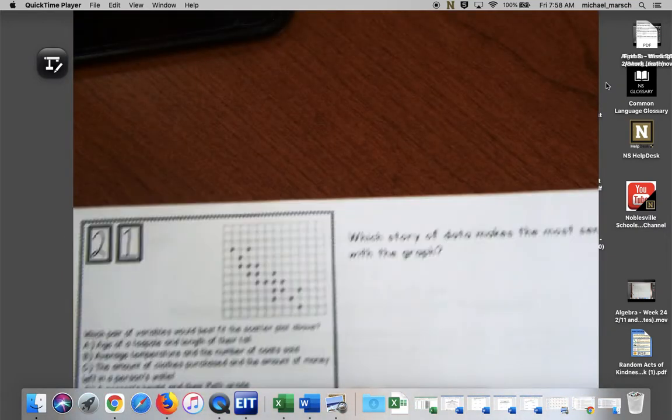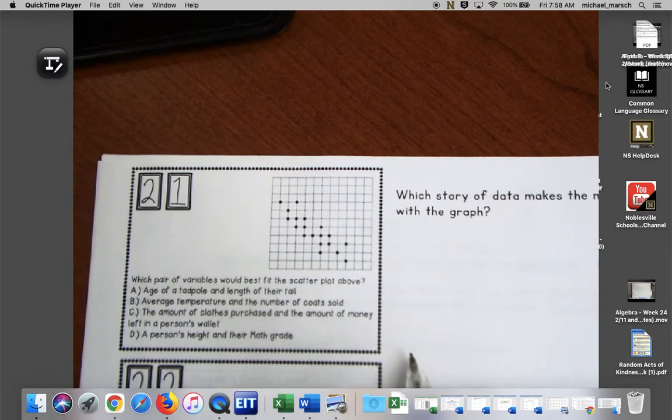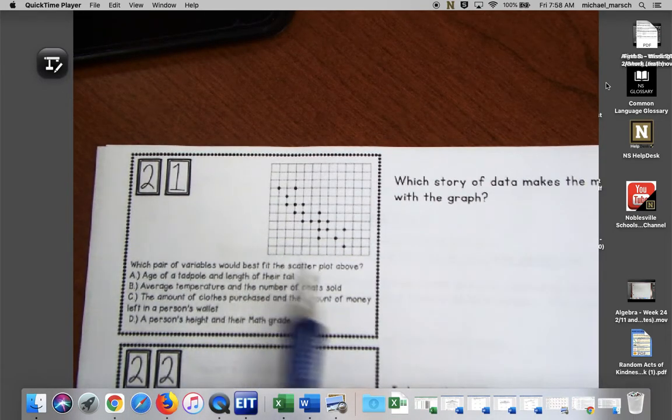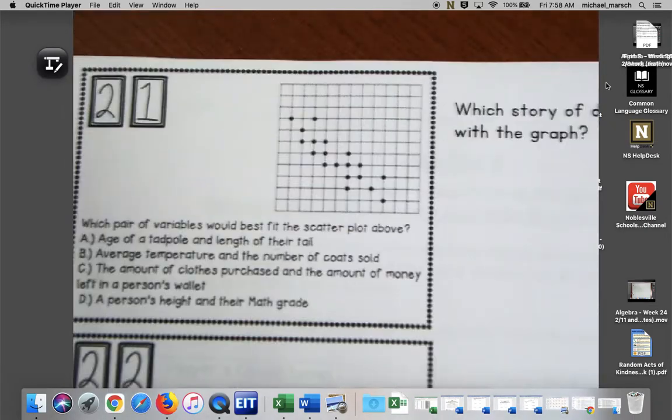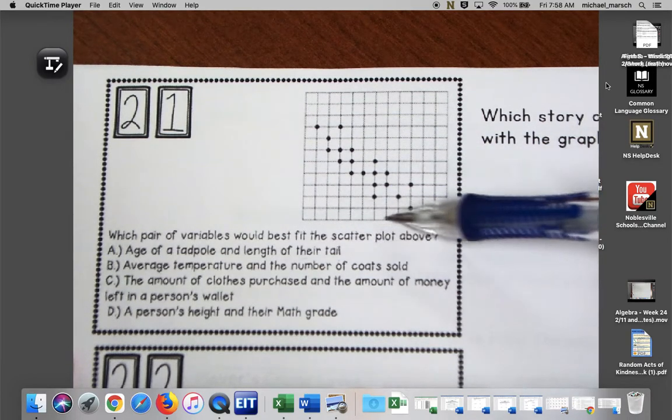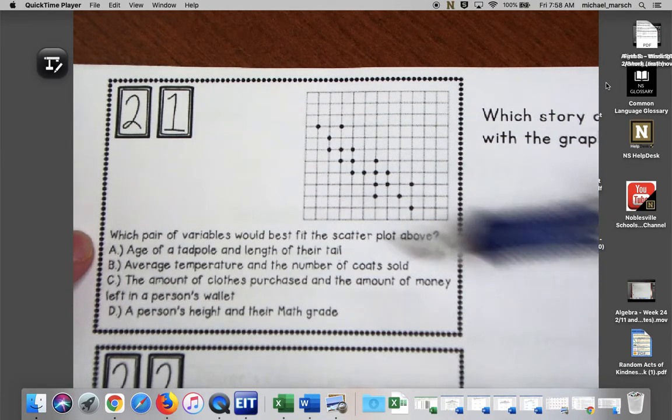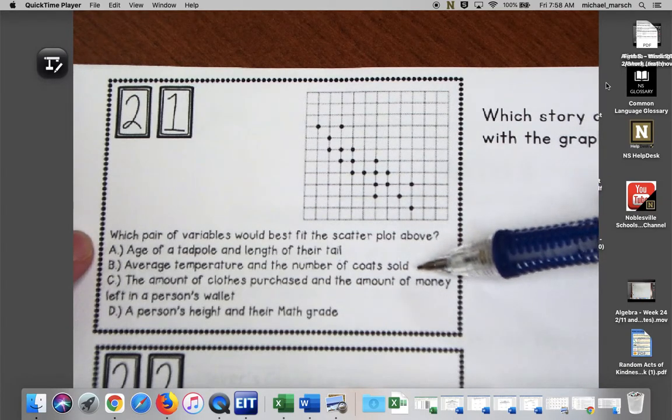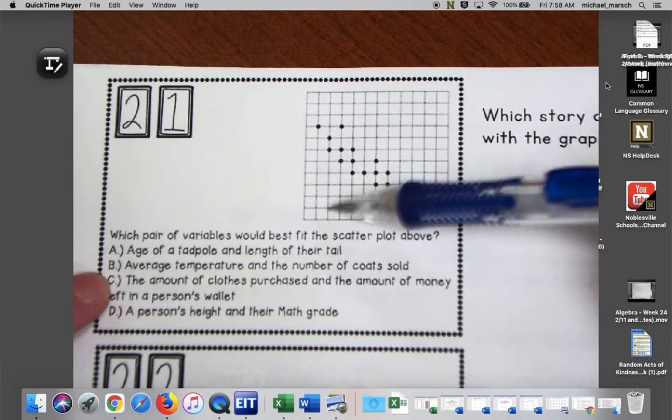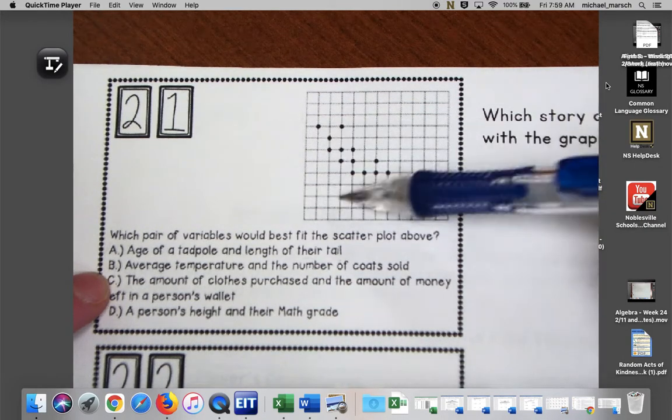Number 21, which pair of variables would best fit the scatter plot above? We're going to look and see if this matches age of a tadpole and the length of their tail. I don't know a whole lot about tadpoles, but I'm pretty sure their tail disappears, right? So the age could be increasing and the tail could be decreasing, so A could be it. Average temperature and the number of coats sold. If the temperature is going up or going down, you're probably going to sell more coats. I don't think B is it. I think B should be a positive relationship.